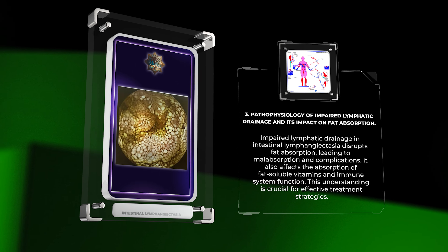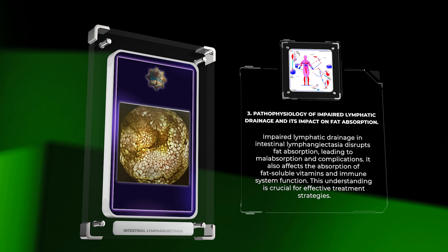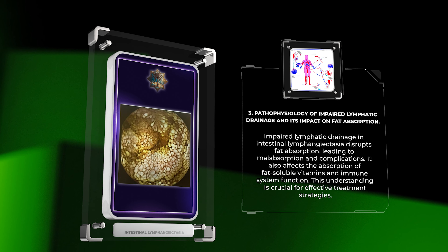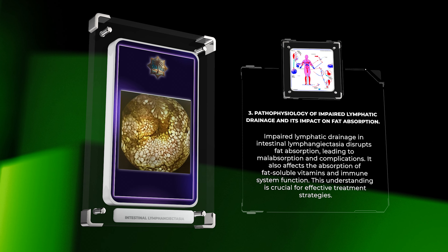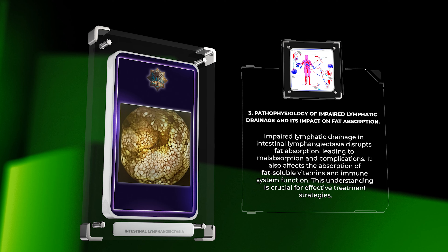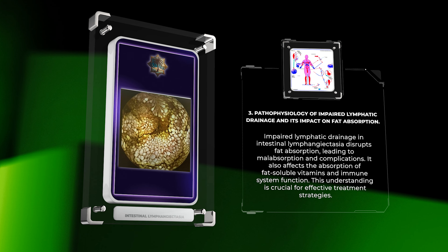Impaired lymphatic drainage in intestinal lymphangiectasia disrupts fat absorption, leading to malabsorption and complications. It also affects the absorption of fat-soluble vitamins and immune system function. This understanding is crucial for developing effective treatment strategies.